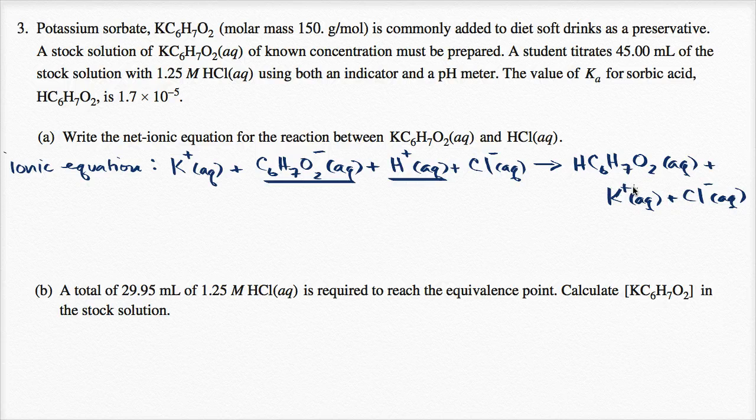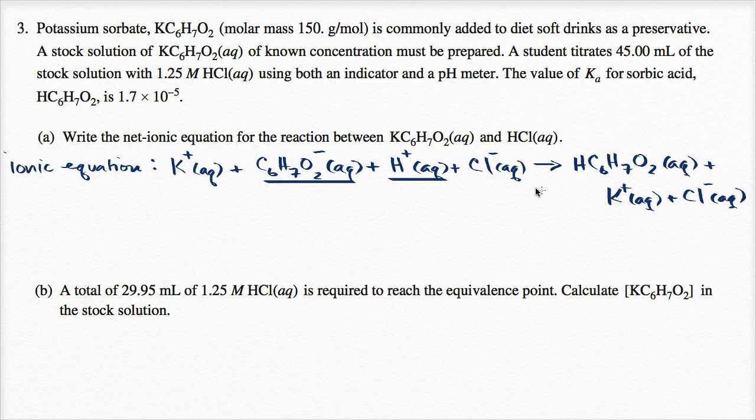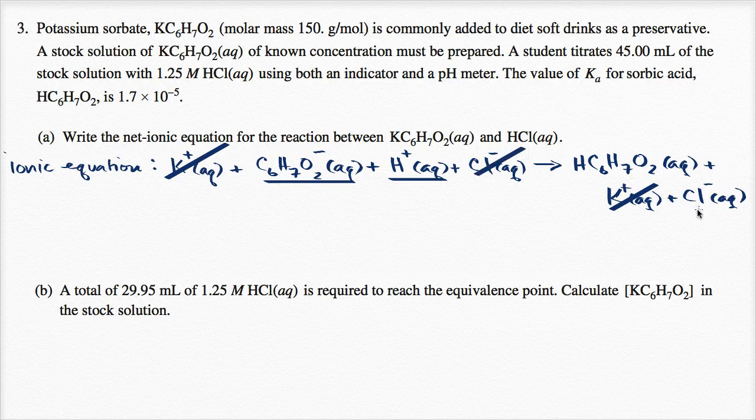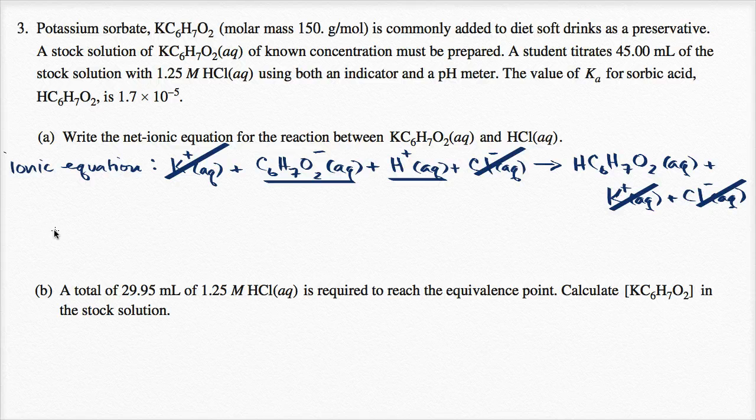Now when you do the net ionic reaction, you can imagine what's going to happen here. I have potassium ions on the left, I have potassium ions on the right. I could net them out on both sides. So let's net them out on both sides. I have chloride ions on the left, I have chloride ions on the right, I can net them out on both sides, and then I can write the net ionic equation.